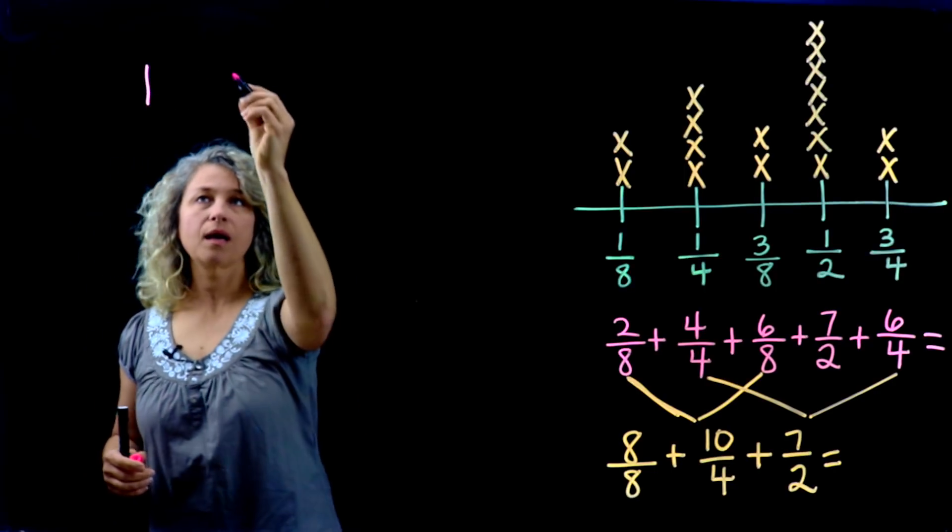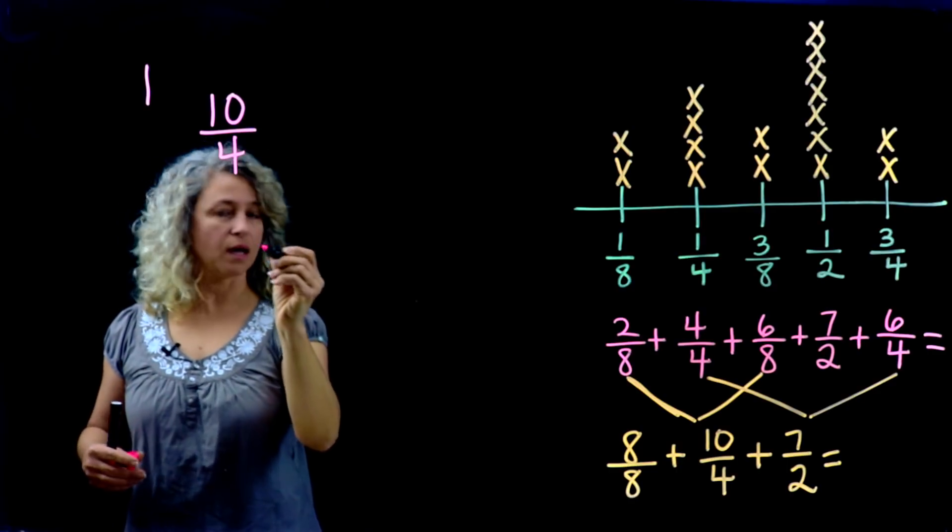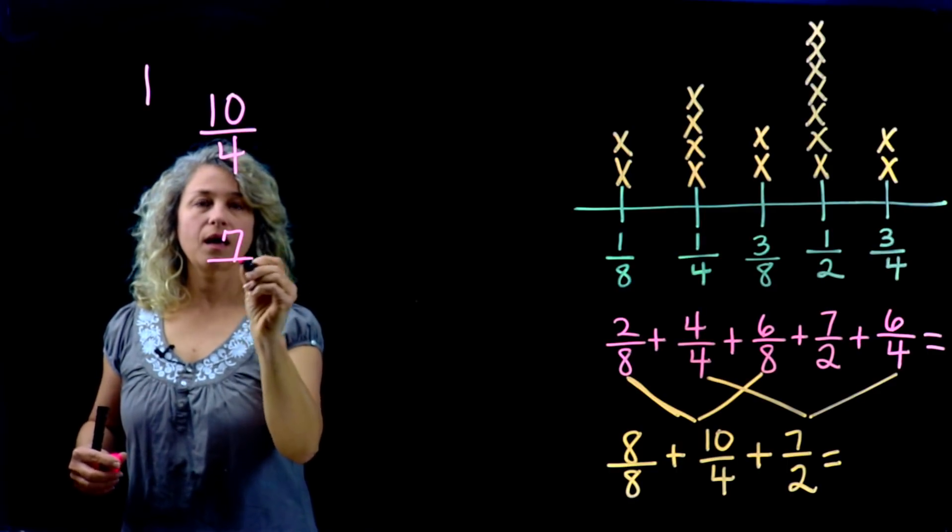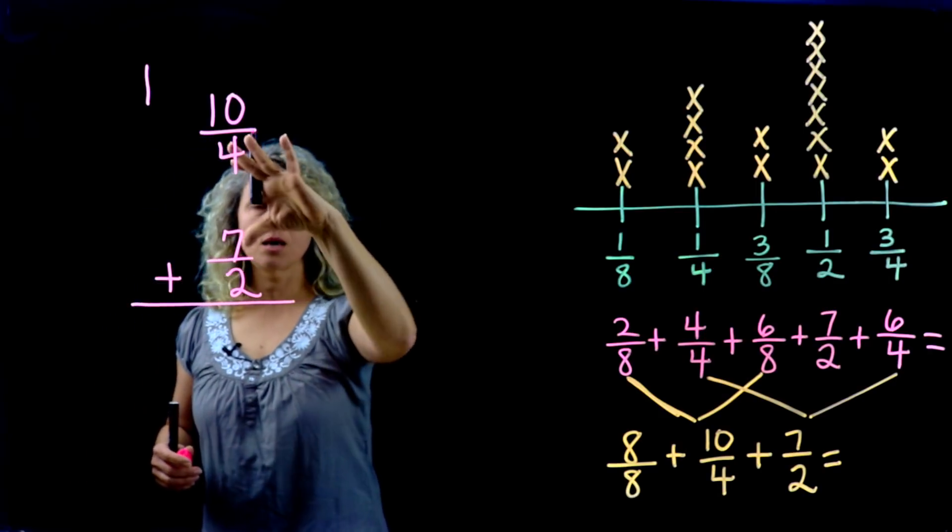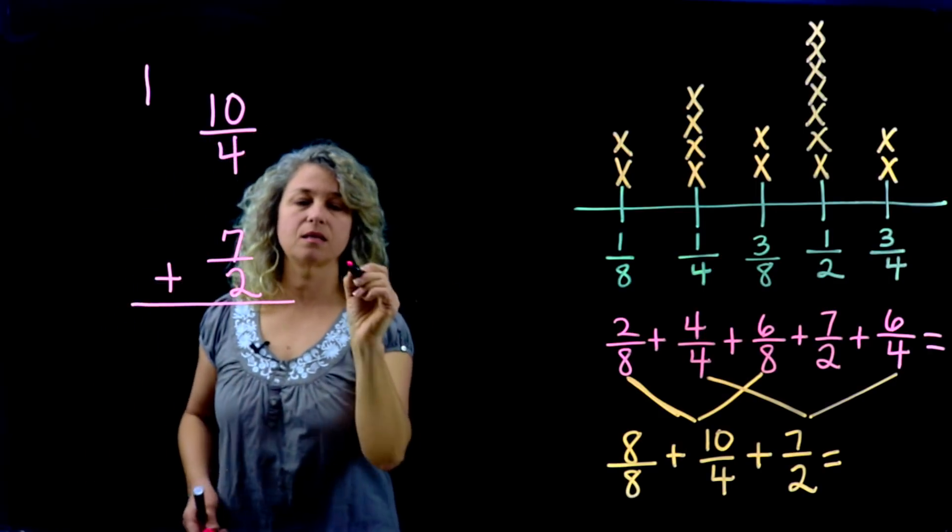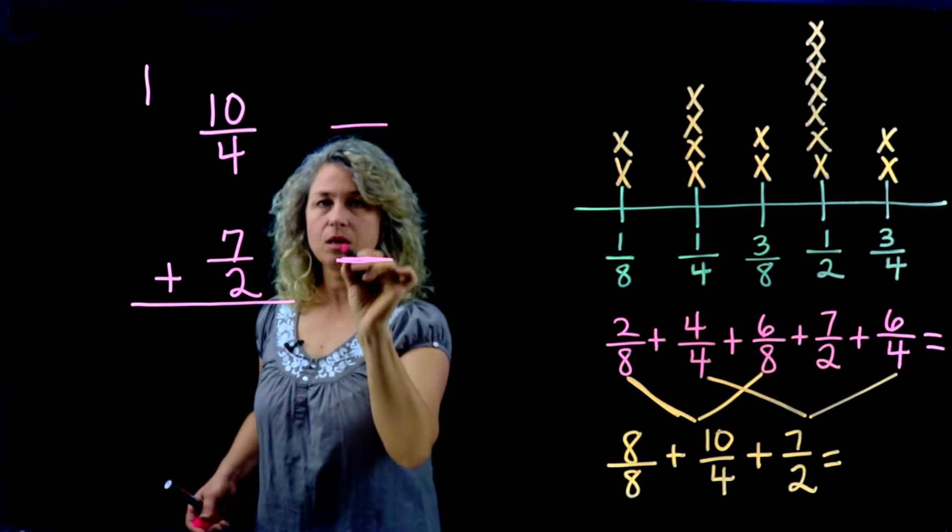So eight-eighths is one whole, and I have ten-fourths and I have seven-halves. I cannot add these unless the denominators are the same, so let's find a least common multiple.